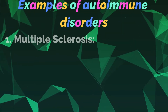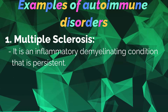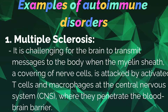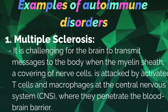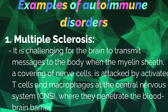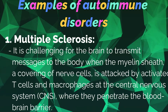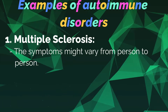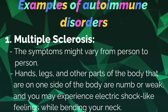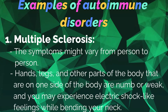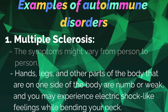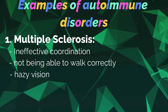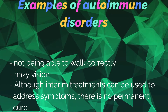Number one: Multiple sclerosis. It is a chronic inflammatory demyelination condition affecting the central nervous system. It is challenging for the brain to transmit messages to the body when the myelin sheath — a covering of the nerve cells — is attacked by activated T cells and macrophages at the CNS, where they penetrate the blood-brain barrier. Symptoms vary from person to person and include numbness or weakness in limbs on one side, electric shock-like feelings when bending the neck, poor coordination, difficulty walking, and hazy vision. There is no permanent cure, although treatments can address symptoms.